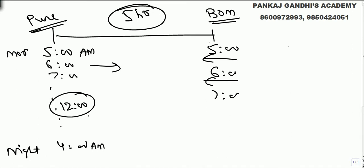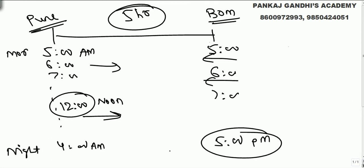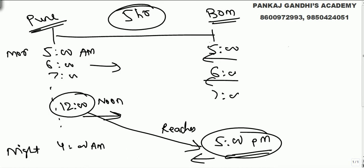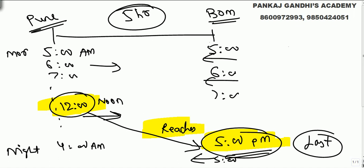Now let's say we start from here at 12 o'clock noon, so we are going to reach at 5 PM. The last train we are going to meet is the one starting at 5 o'clock — because our train starts from here at 12 and reaches at 5, and there is one train just starting from there at 5 o'clock. So the last train we meet is the one which starts from there at 5.